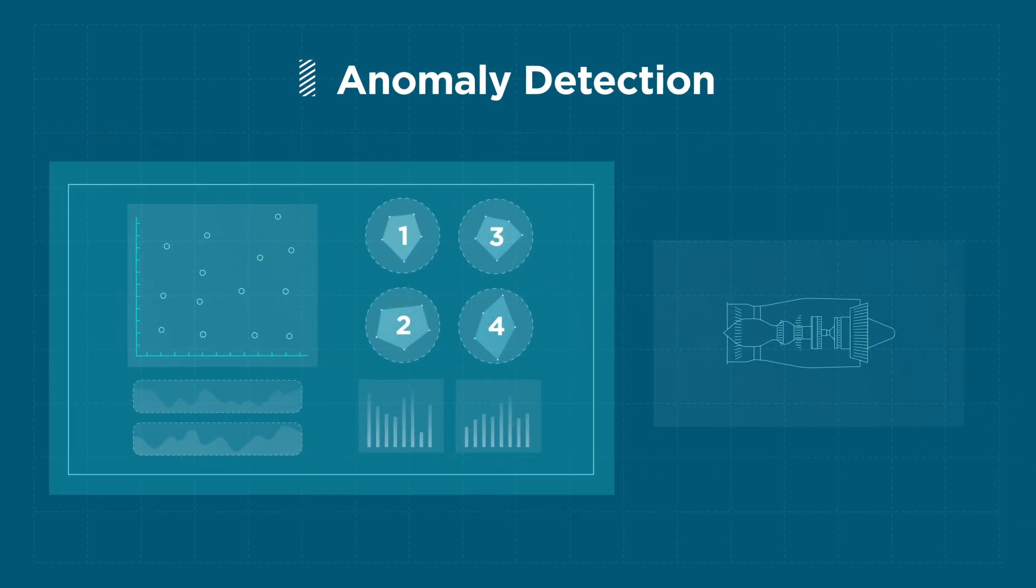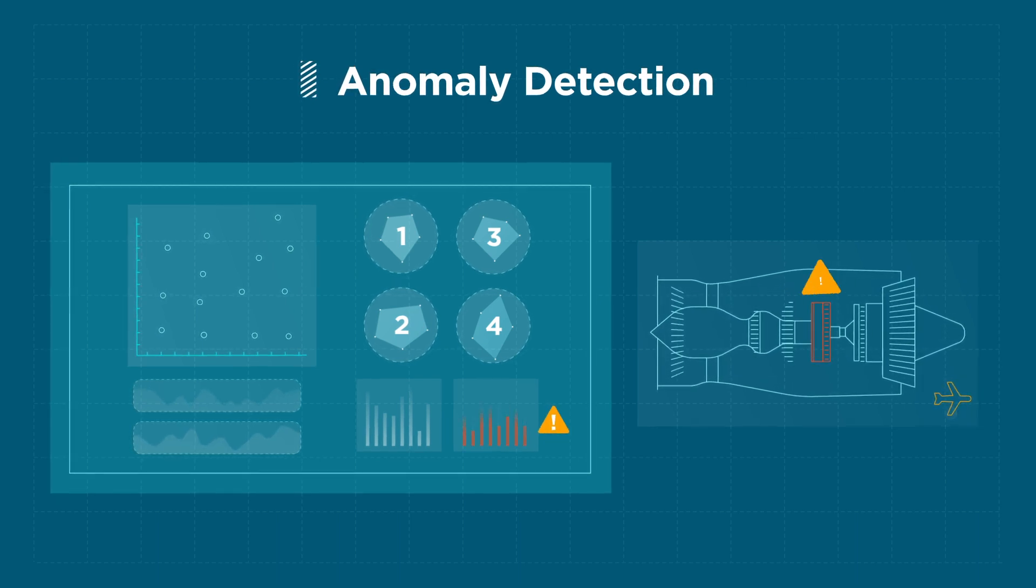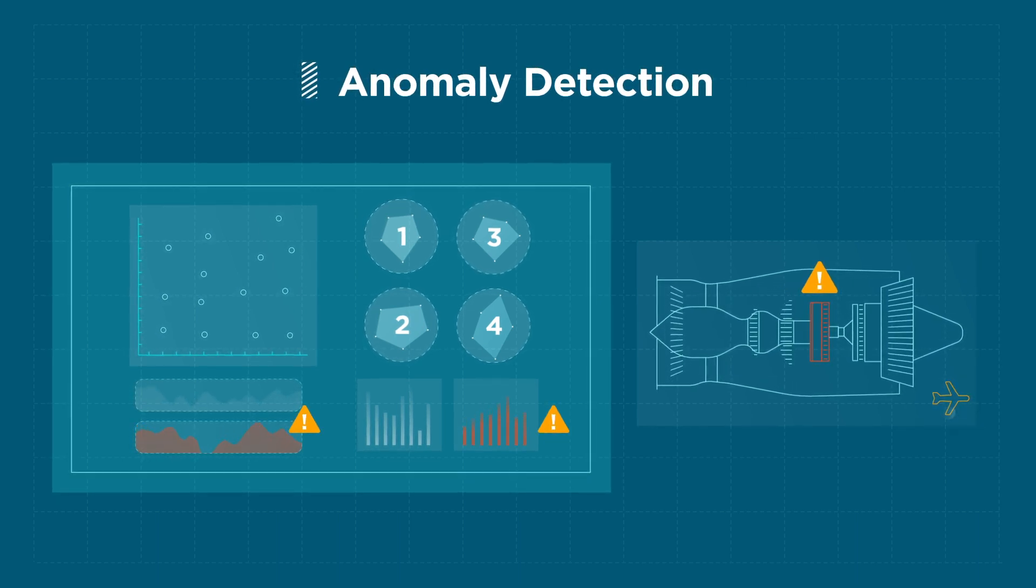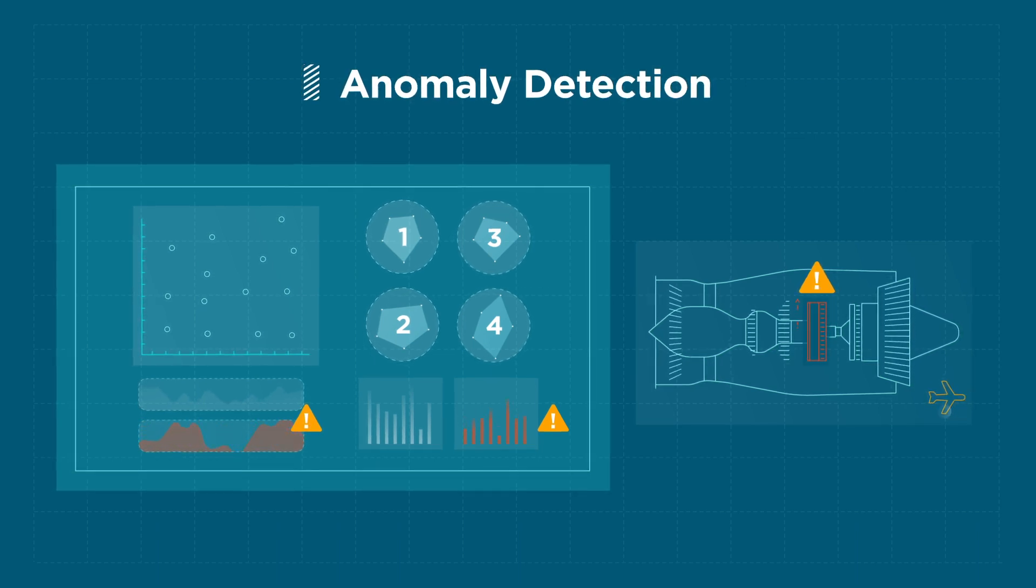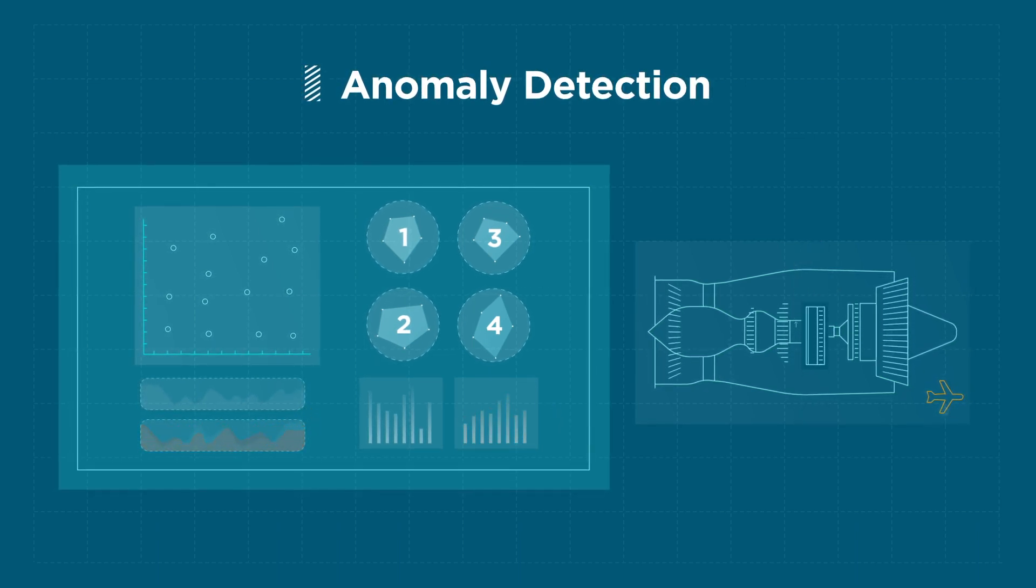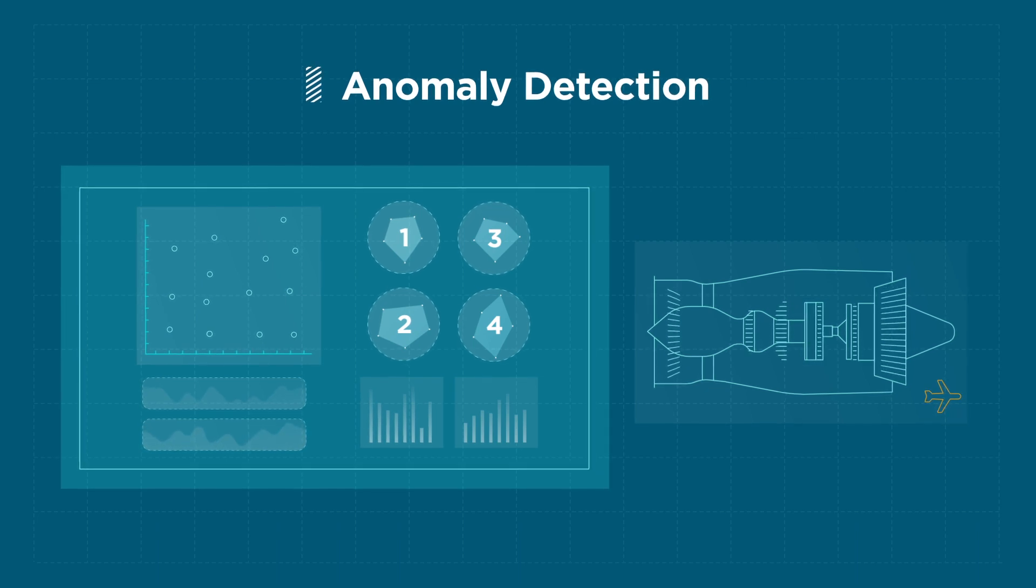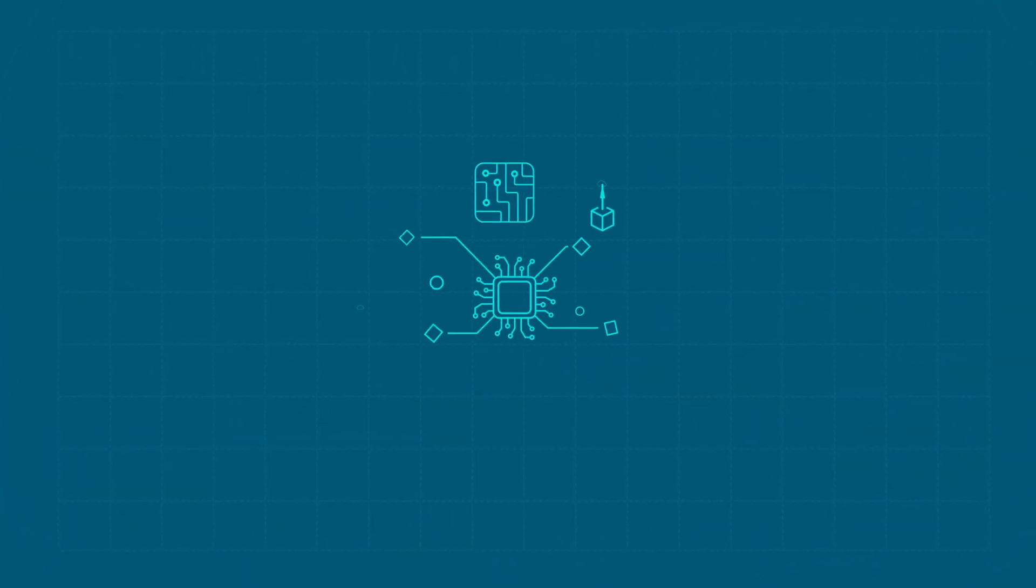For example, real-time data from jet engines can be used to monitor the health of the equipment and detect if certain components are likely to fail soon, allowing companies to perform preemptive maintenance that can save substantial operational costs.